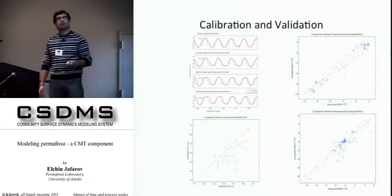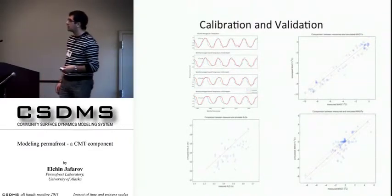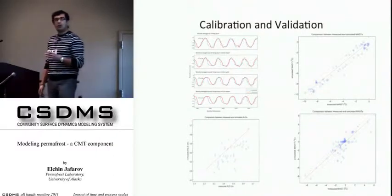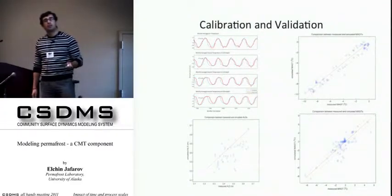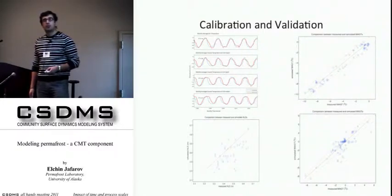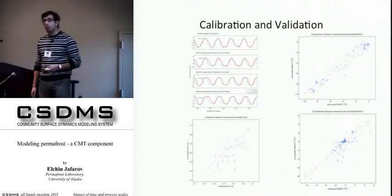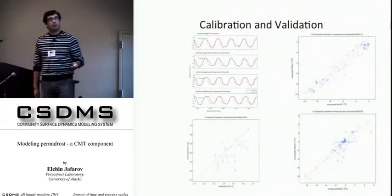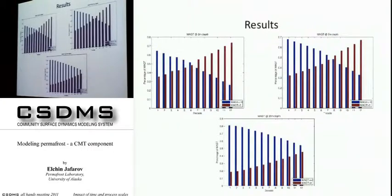After calibration, we validated the model with the IPY dataset from 2007-2009, more than 60 stations with mean annual ground temperature mostly at 20 meter depth. We have quite good correlation. I also validated our simulations with the mean annual ground temperature for the U.S. schools project for Alaska, mostly shallow borehole stations from one to six meter depths. I went further and validated the active layer thickness using measured data from circumpolar active layer monitoring stations.